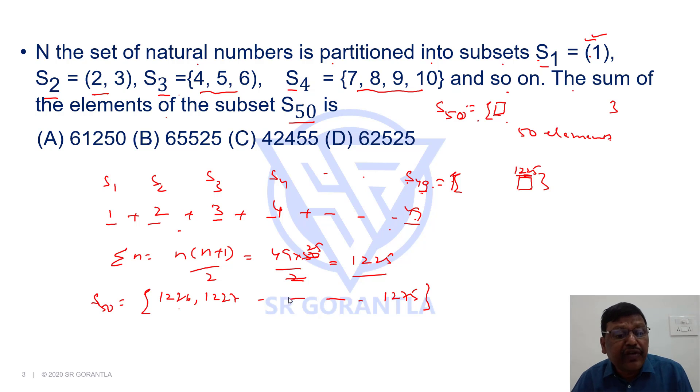1226 to 1275, including 1226, there will be 50 elements or you can see the last set here ends with 1225. 50 more elements means this subset should end with 1275.